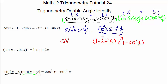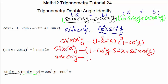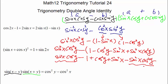After substitution we have sine²x cosine²y minus (1 - sine²x)(1 - cosine²y). Expanding the bracket: sine²x cosine²y minus 1 plus cosine²y plus sine²x minus sine²x cosine²y. The sine²x cosine²y terms cancel, leaving: negative 1 plus cosine²y plus sine²x.